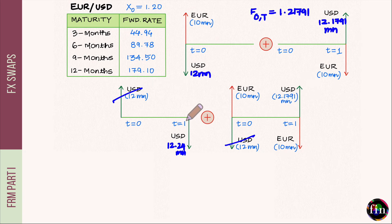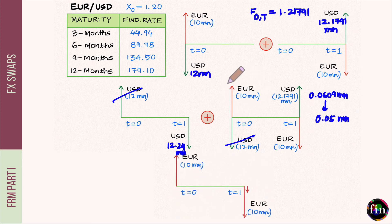12.24 is being paid out, 12.1791 million is being received. On a net basis, the firm is paying out 12.24 minus 12.1791, which comes to 0.0609 million USD. In euro terms, using the forward exchange rate, this converts to 0.0609 divided by 1.21791, giving approximately 0.05 million euros.